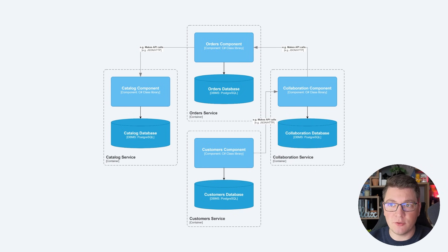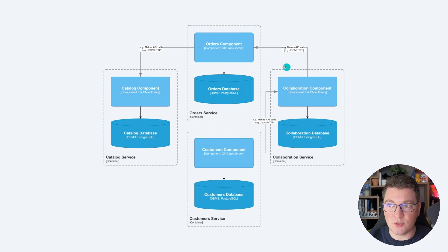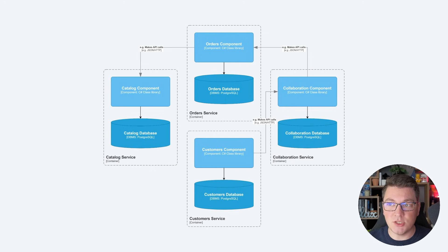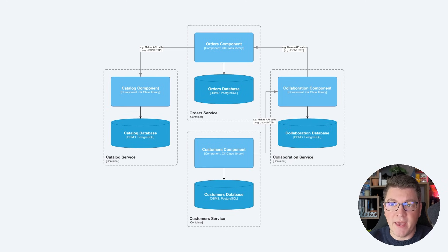There are many reasons why you would want to build a microservices system. The two most common problems this architecture solves are organizational issues inside of a big company — each microservice will be assigned to a specific development team inside of the larger organizational unit. The second problem that microservices solve is scalability. Microservices allow you to scale each service independently, which is a very powerful quality, and sometimes it's absolutely necessary and you can't achieve the desired scale inside of a monolith.